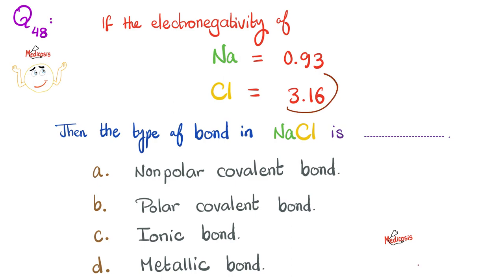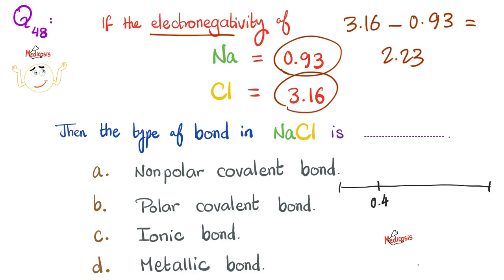Here is how you do it. You subtract 0.93 from 3.16, get the difference in electronegativity. So 3.16 minus 0.93 equals 2.23. After this, you go back to basics and draw your timeline. Is it less than 0.4 or between 0.4 and 1.7 or is the difference greater than 1.7? As you see, 2.23 is greater than 1.7, which means this is an ionic bond.